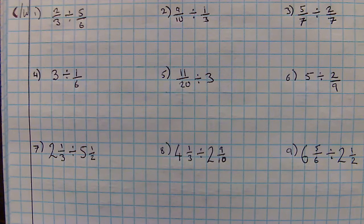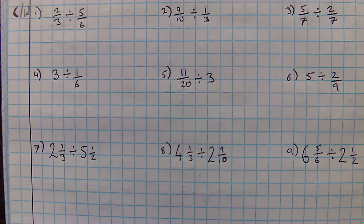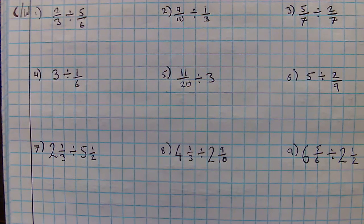All right. Here's 9 questions for you to do. For the first ones, you are simply going to be using keep flip change to change them into multiplications, doing the multiplication. Check whether or not you can simplify and whether or not you've got top-heavy answers.